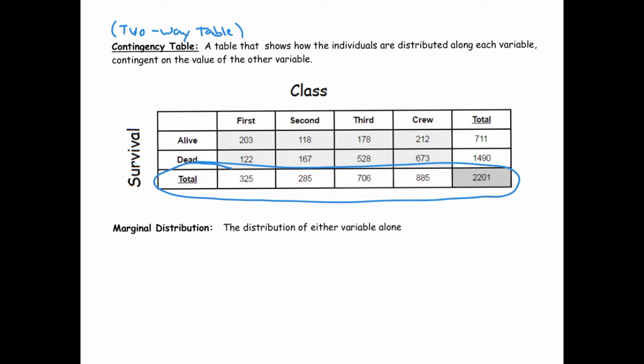When you're looking at the margins, that's the marginal distribution, and it's the distribution of either variable alone. For instance, we're looking right now at the marginal distribution of class. We sort of collapse this information into one row. So I've got the marginal distribution of class.